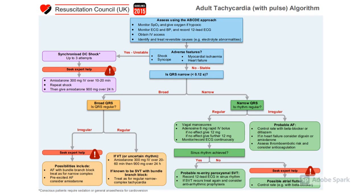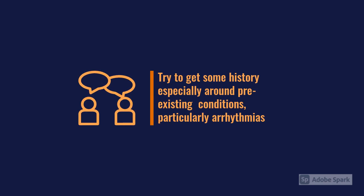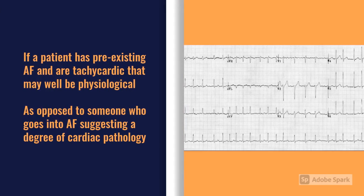It's important to get some history on the patient contemporaneously. Knowing that the individual has AF previously is really important, because what looks like arrhythmogenic fast AF could actually be someone with AF who has sepsis causing a tachycardia, making it look like fast AF. We don't want to use electrical therapeutic means to reduce a physiological tachycardia in someone who just also happens to have AF — that would reduce their ability to compensate. What that patient probably needs is fluids.